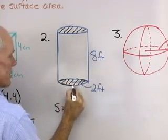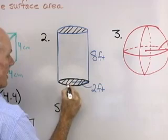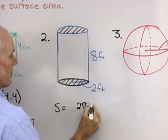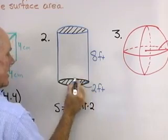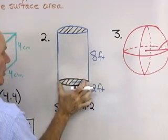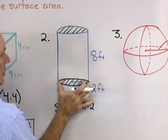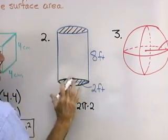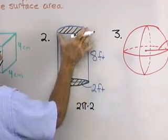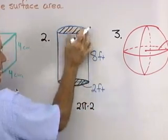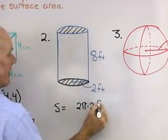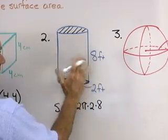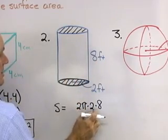The circumference of that circle will be 2π times the radius, which is 2. That's the circumference of that circle. Then I'm going to take that circle and slide it up 8 feet and keep track of the amount of surface area that's generated when I do that. So I'll take this circumference, slide it through 8 feet, and so I'll have times 8 for the total surface area around the outside here. Circumference of the base times the height.